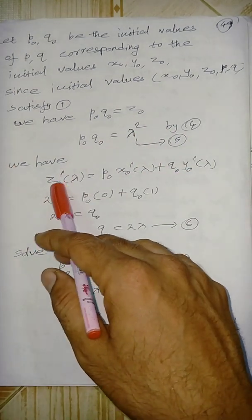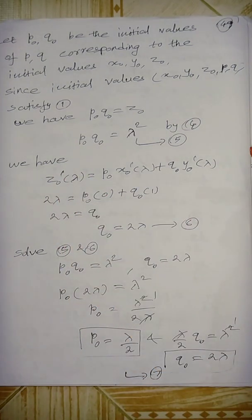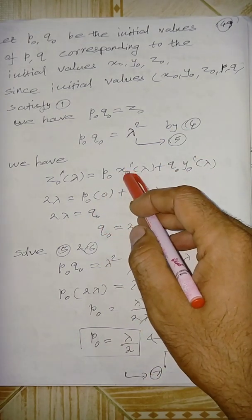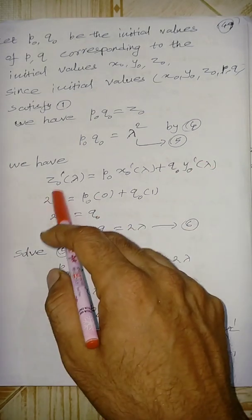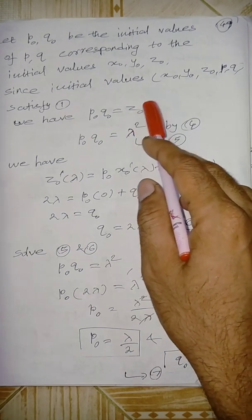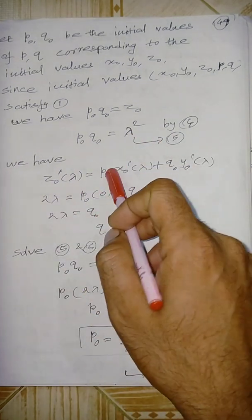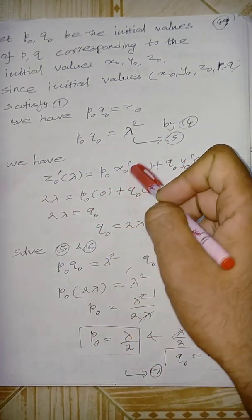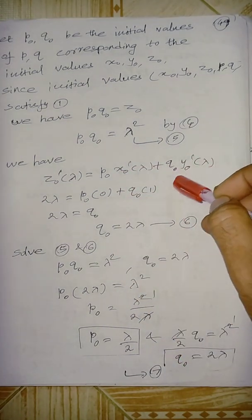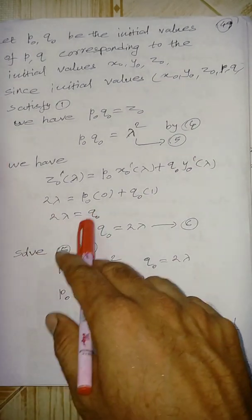Next, as per the rule, z0 dash of lambda equals p0·x0 dash(lambda) + q0·y0 dash(lambda). Differentiating z0 = lambda squared with respect to lambda gives 2·lambda. Since x0 = 0, x0 dash = 0. Since y0 = lambda, y0 dash = 1. So the expression gives 2·lambda = q0.